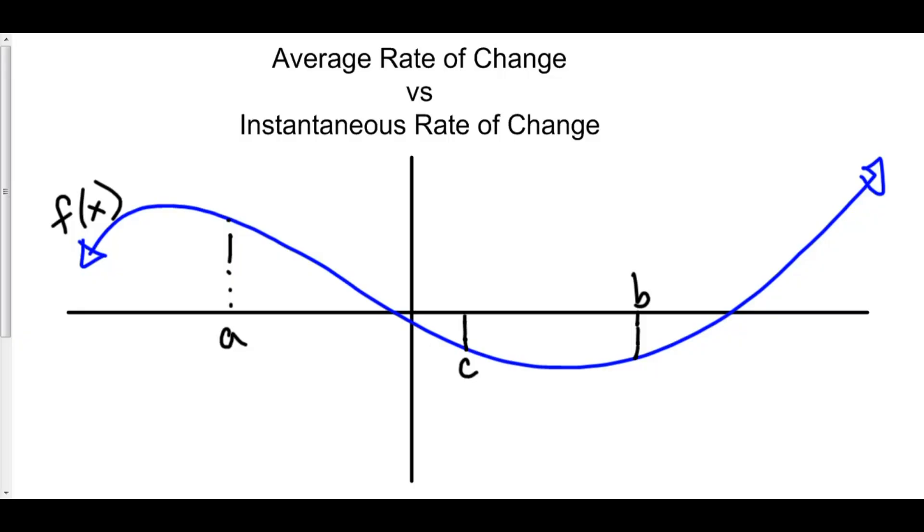What is the difference between the average rate of change of some function f and the instantaneous rate of change of some function f? The answer is that the average rate of change is really just the slope between two points, and the instantaneous rate of change is the derivative at one point.